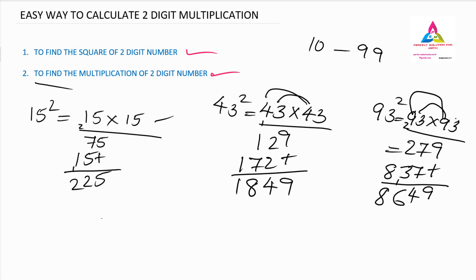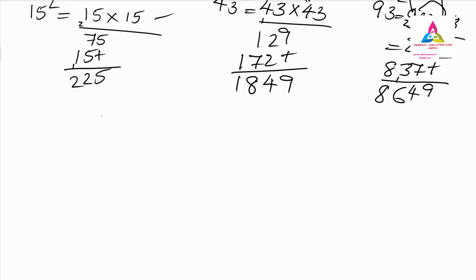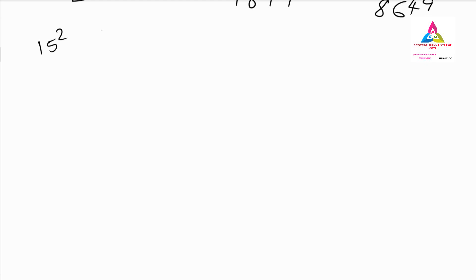Here we are talking about two-digit numbers from 10 to 99. The traditional method takes time, so we will use a simpler method. There is an easy formula to solve the same problem. We will use the same numbers — 15, 43, and 93 — starting again with 15 squared, which we already know is 225.